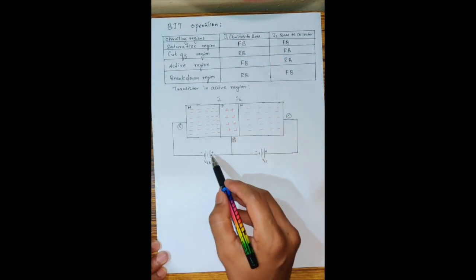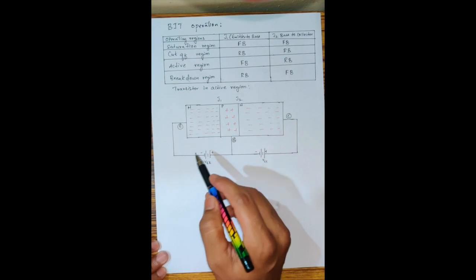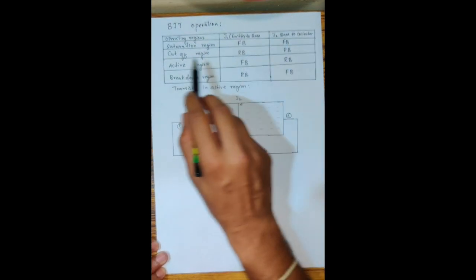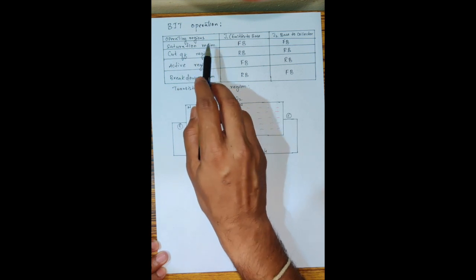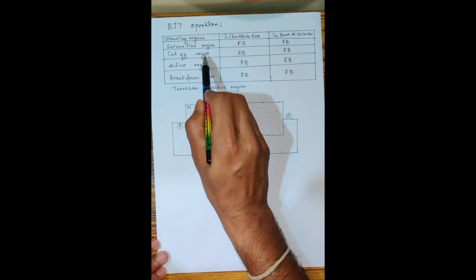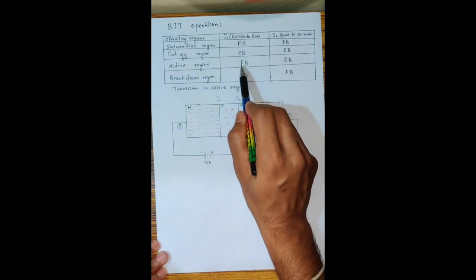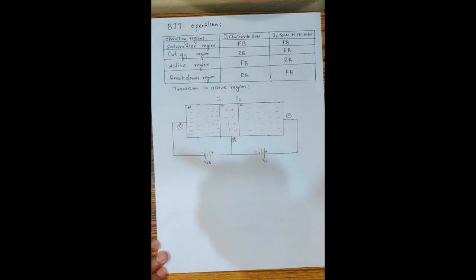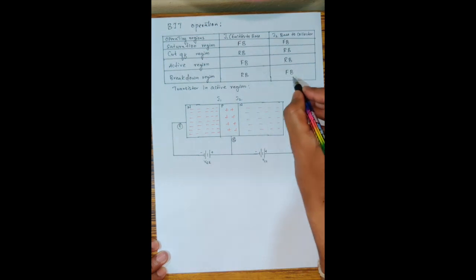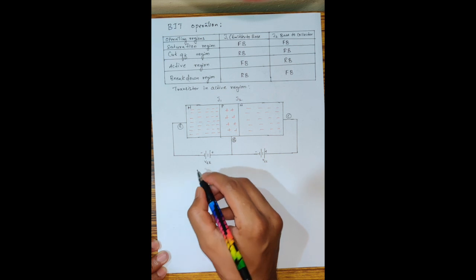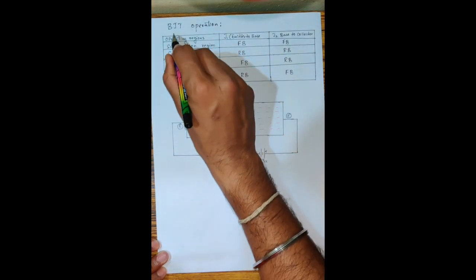Based on these biasing combinations, the operating regions are defined. When both J1 and J2 are forward biased, that region is called the saturation region. When both are reverse biased, it is called the cutoff region. When J1 (input) is forward biased and J2 (output) is reverse biased, that is the active region. When J1 is reverse biased and J2 is forward biased, that is called the breakdown region.